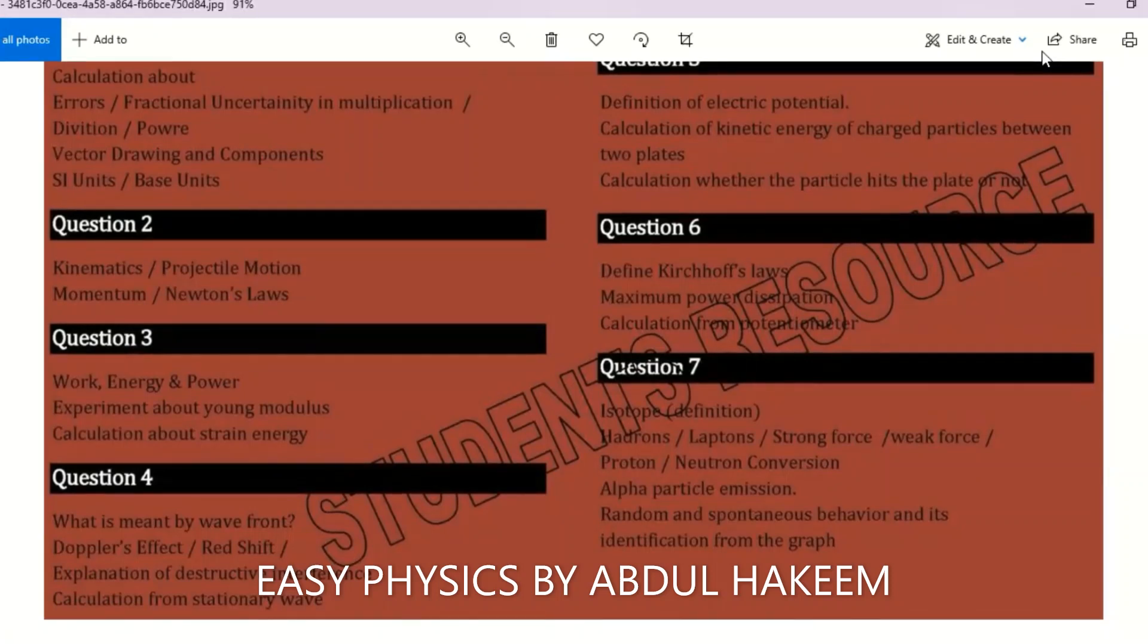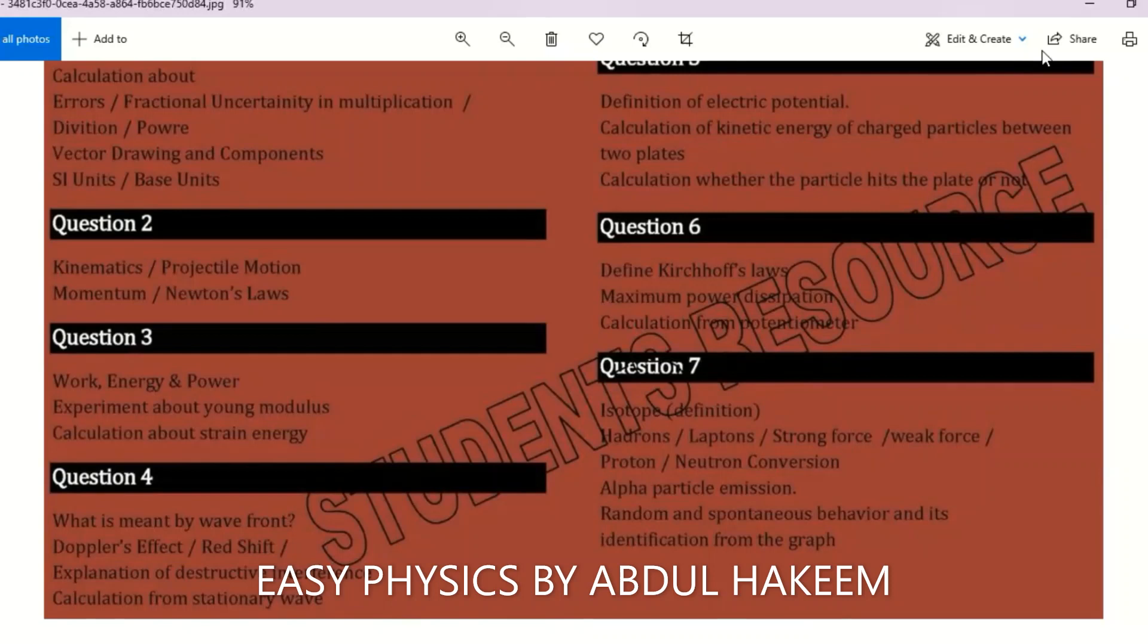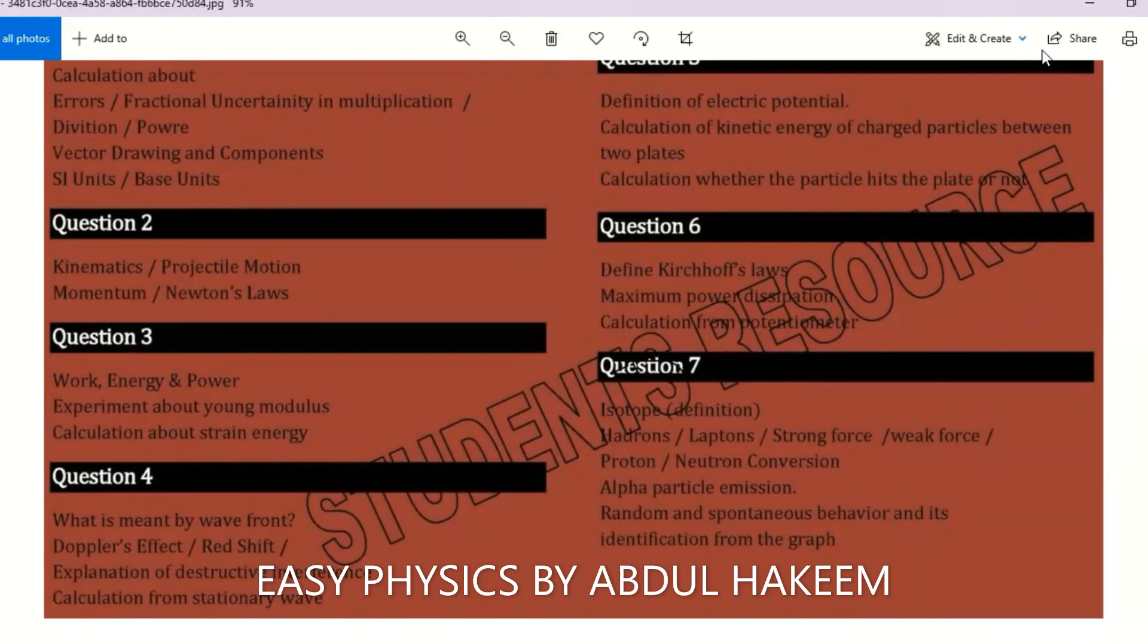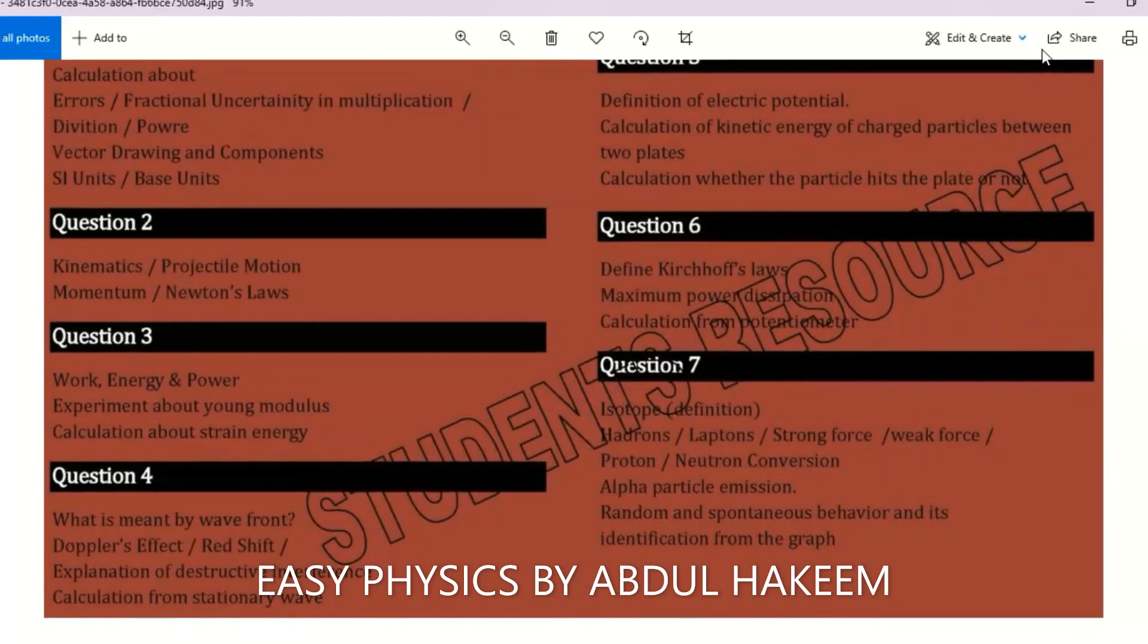Isotope: nuclei of the same element having the same number of protons but different number of neutrons. Hadron, lepton, strong force, weak force, proton neutron conversion, alpha particle emission, properties of alpha beta gamma, random and spontaneous, and identification of the emission from the graph.